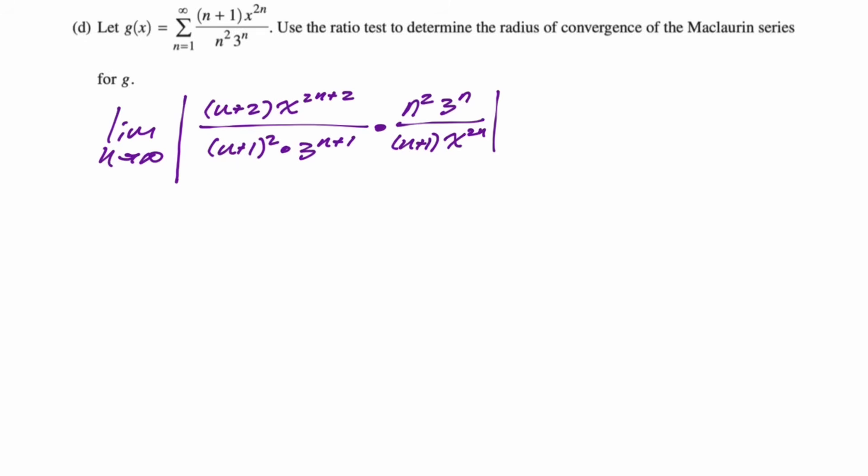Now we get to do all the fun algebraic stuff where we simplify. The numerator is (n+2) times n^2, which is basically n^3. The denominator, (n+1)^2 times (n+1), basically n^3. That limit will be 1. You have 3^n over 3^(n+1). That's just 1/3, or a 3 in the denominator is left over. And then x^(2n+2) divided by x^(2n) is just x^2. So this simplifies to the absolute value of x^2/3 is less than 1. So we know that this will converge if the absolute value of x^2/3 is less than 1, which means that the absolute value of x^2 is less than 3.